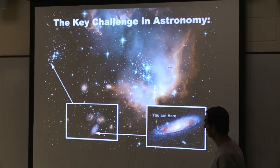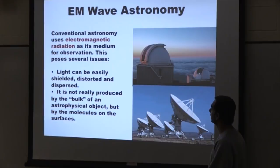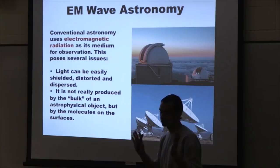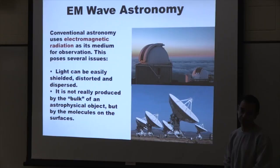Up till now, astronomers have been using light to see what's going on out there, and that's served very well for hundreds of years. Many of you know that light is a form of electromagnetic radiation, something we've been using for hundreds of years using telescopes of various kinds, including very good ones today. But it turns out that's actually not the best medium for observation, and there are several issues with light as a tool for astronomy.